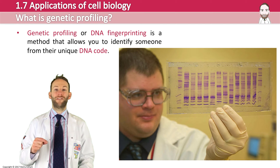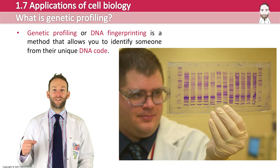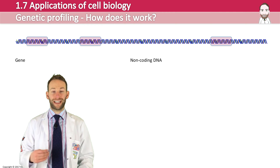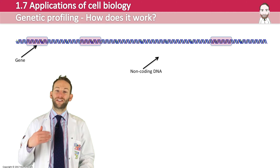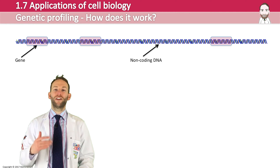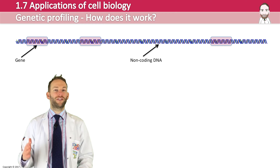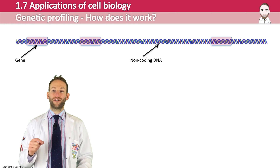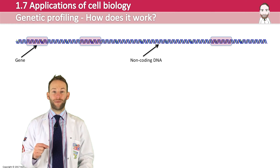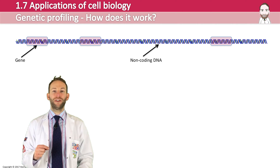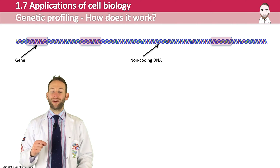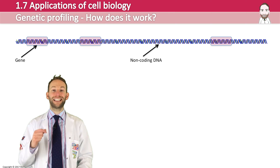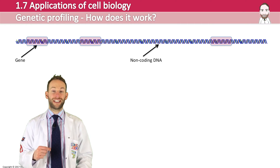Genes don't actually vary all that much between individuals, especially closely related ones. So it won't be that good if you were to just look at the genes to distinguish between two certain individuals. However, the non-coding region of our DNA is highly variable. The bits in between the genes are highly, highly variable, and if we analyse that, then we will be able to clearly distinguish between individuals' DNA.